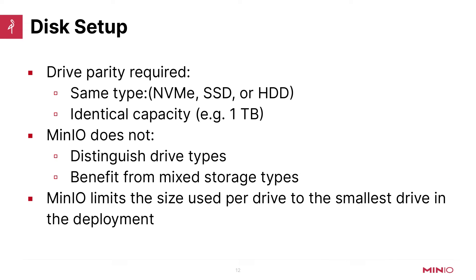Ensure that all server drives you intend MinIO to use are of the same type — that's important. MinIO does not distinguish between drive types, so if you have a one-terabyte SSD and a hard drive, you'll be impacted because they are different speeds. Additionally, MinIO limits the size used per drive to the smallest drive in the deployment. So if you have a four-terabyte drive alongside one-terabyte drives, you won't get full capacity from the four-terabyte drive — that's basically lost space. Make sure all drives are the same size.